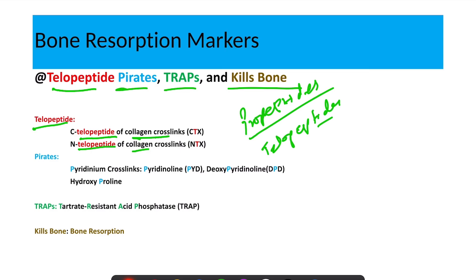Using the word 'Pirates,' you can remember the pyridinium cross-links and proline. The pyridinium cross-links include pyridinoline and deoxypyridinoline, which are markers of bone resorption. 'Traps' stands for tartrate-resistant acid phosphatase — another bone resorption marker. Note that alkaline phosphatase marks bone formation, whereas acid phosphatase marks bone resorption.